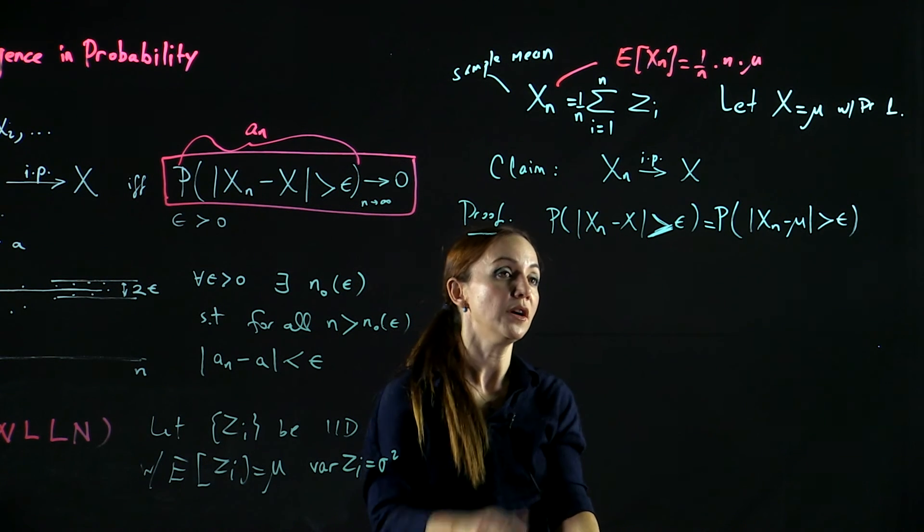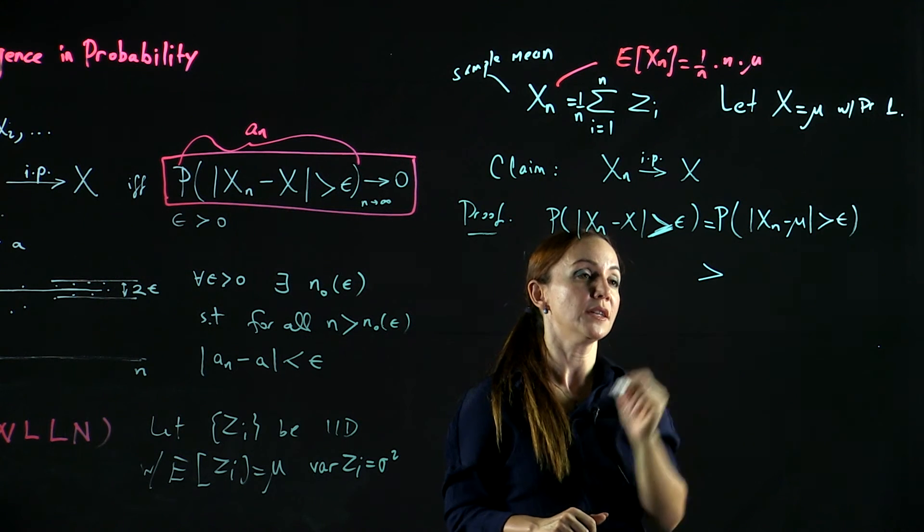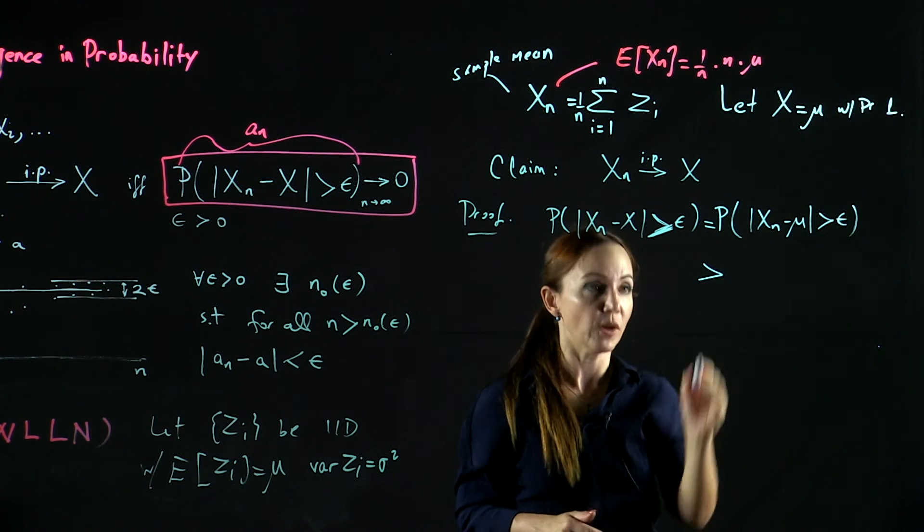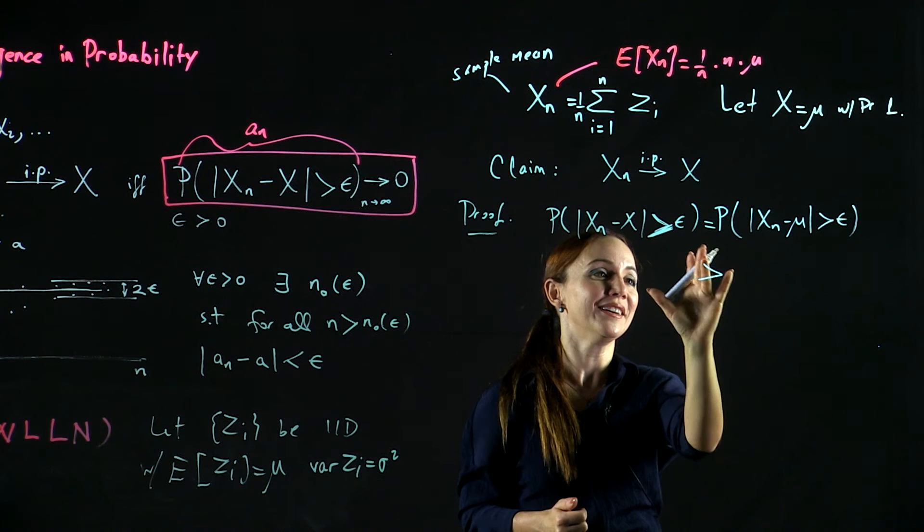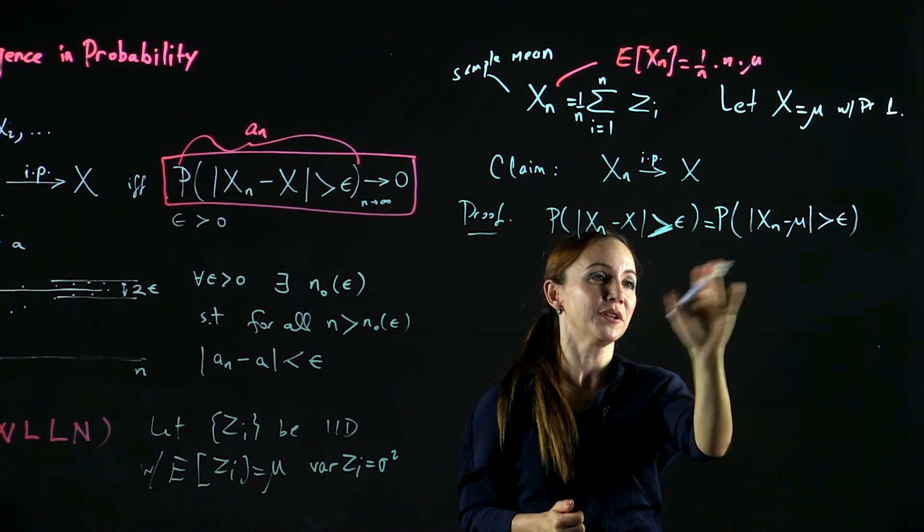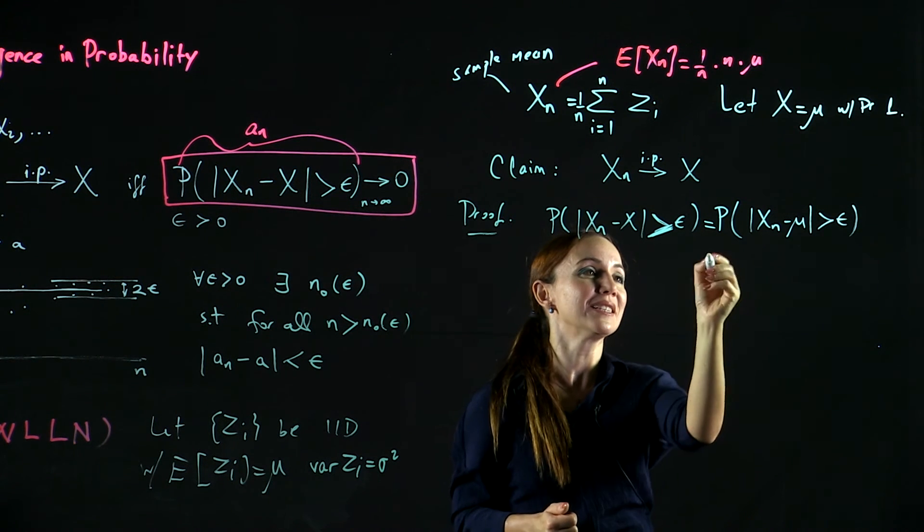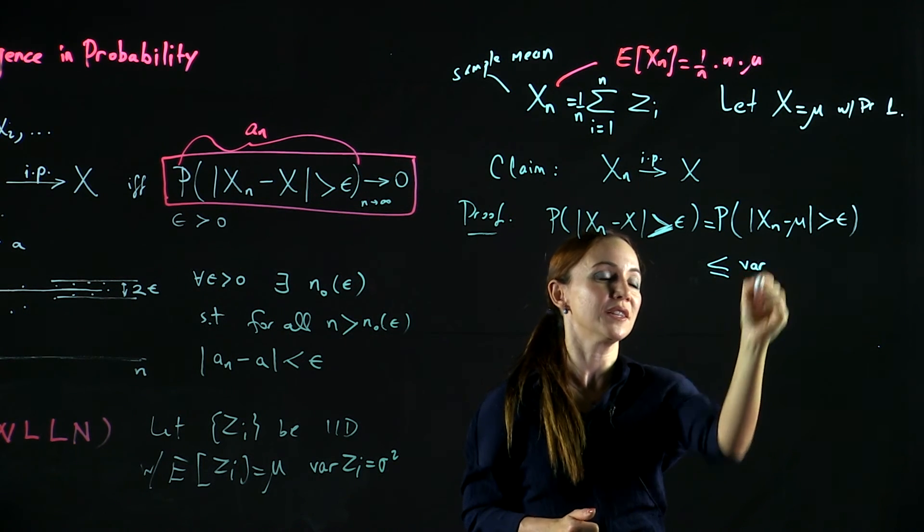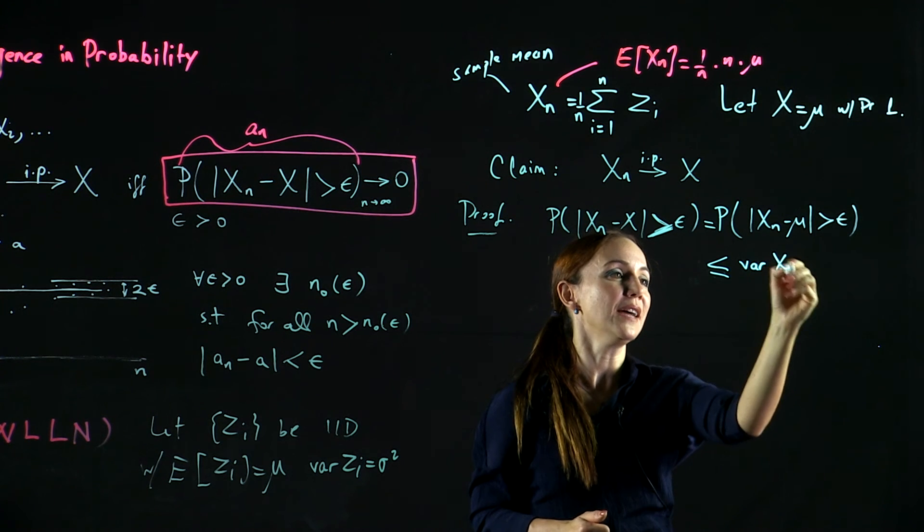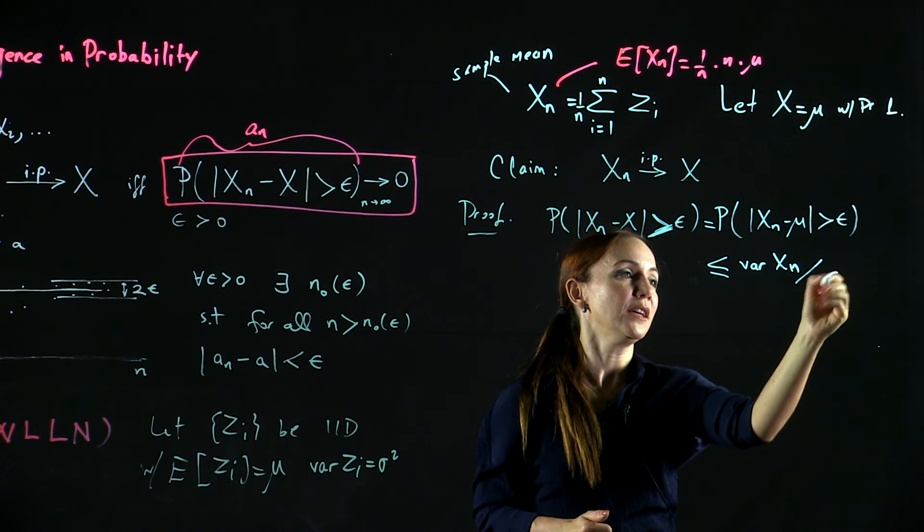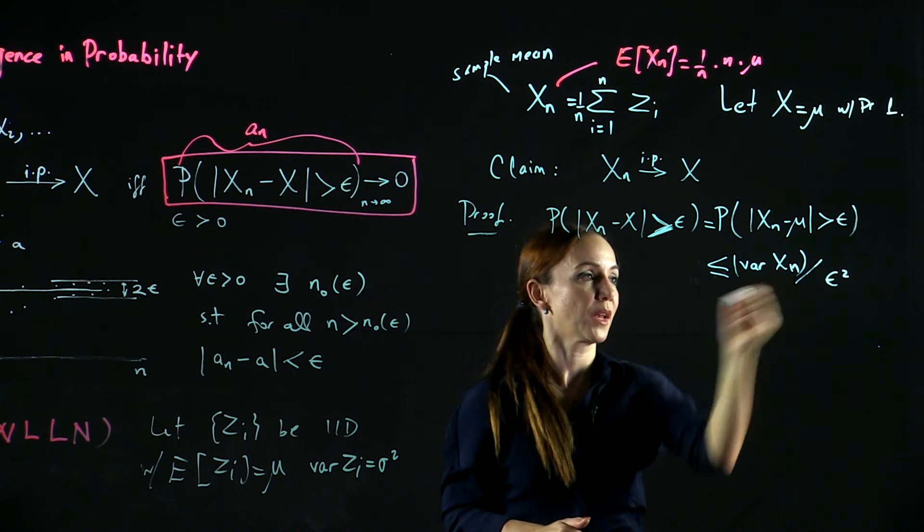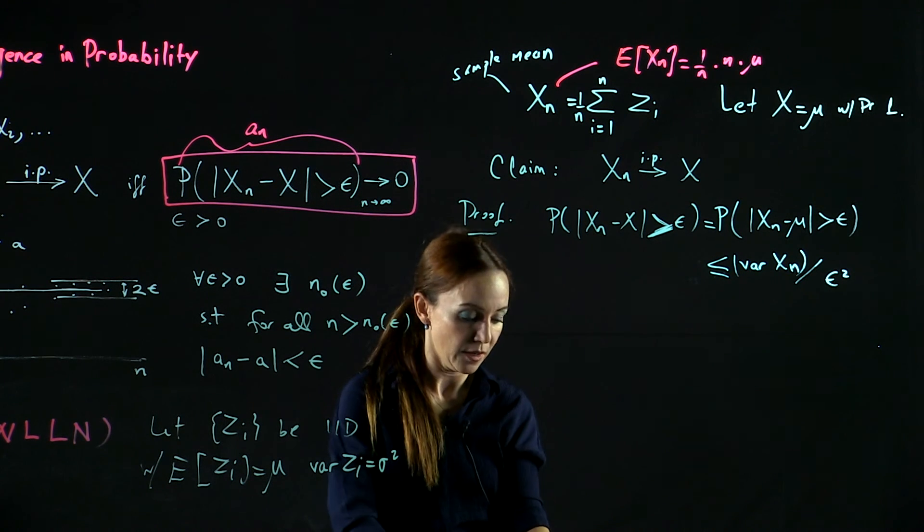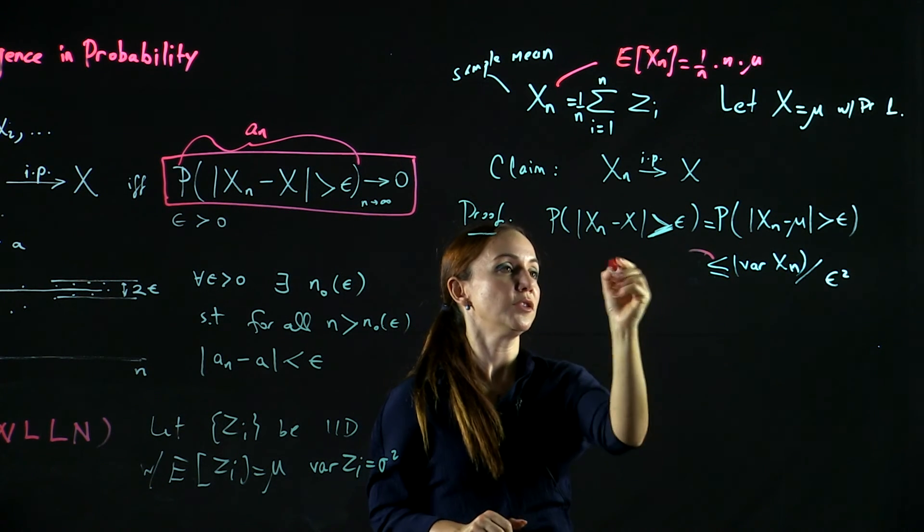So we have Chebyshev inequality that says this probability is less than or equal to the variance of XN divided by epsilon squared. This is by Chebyshev.